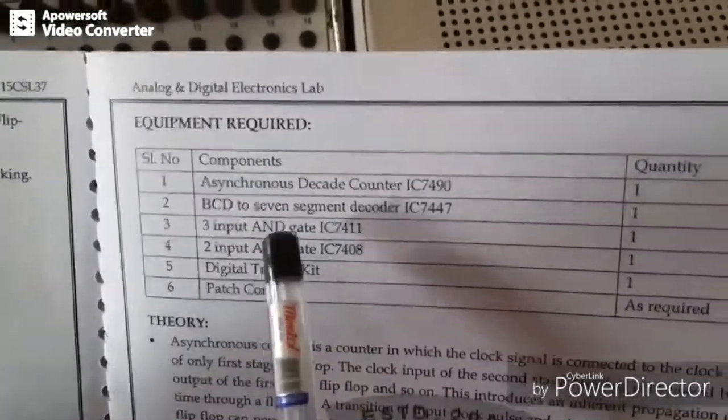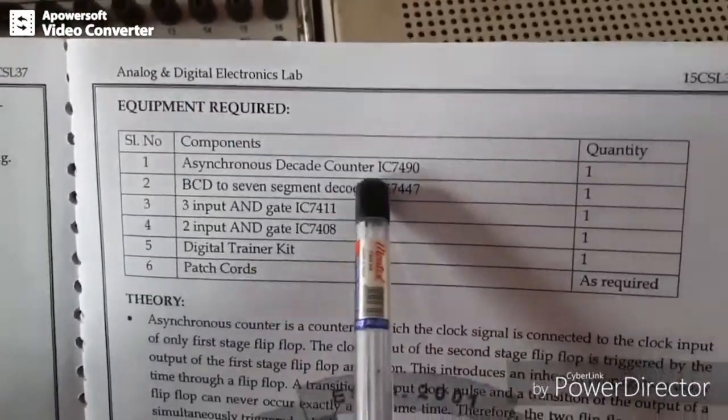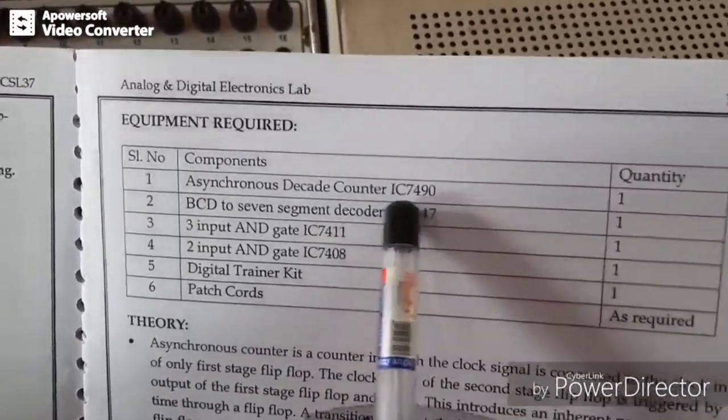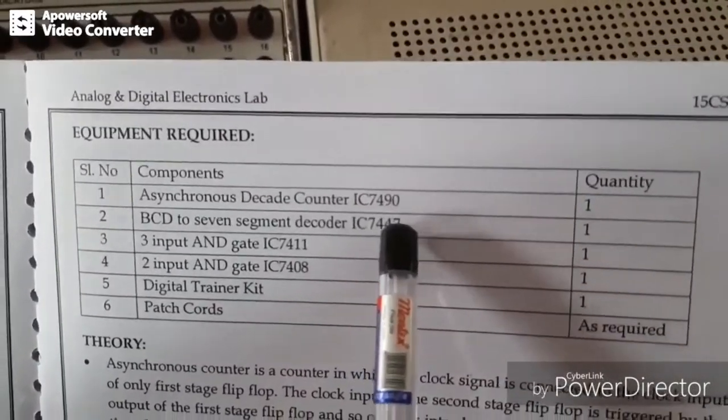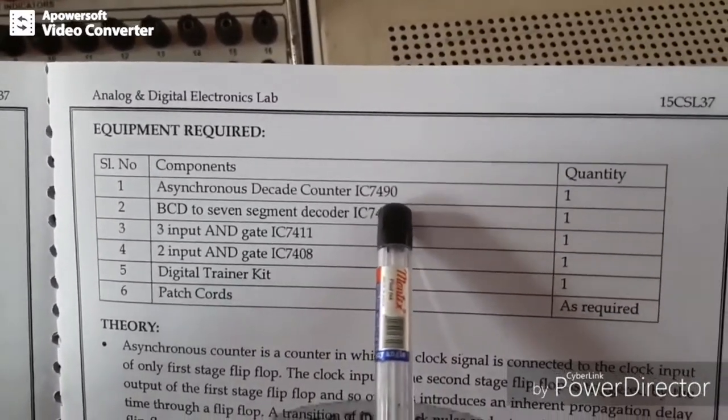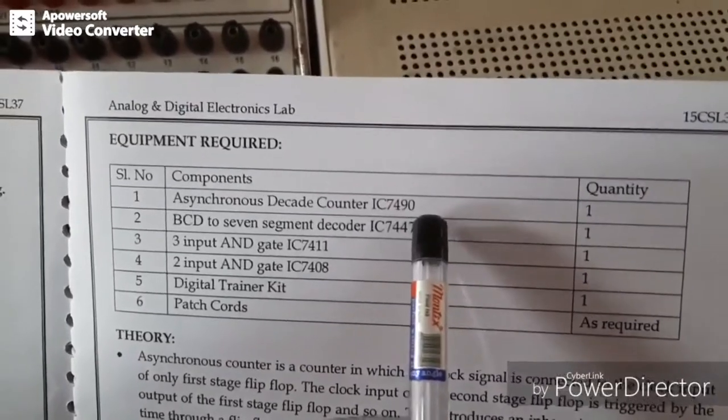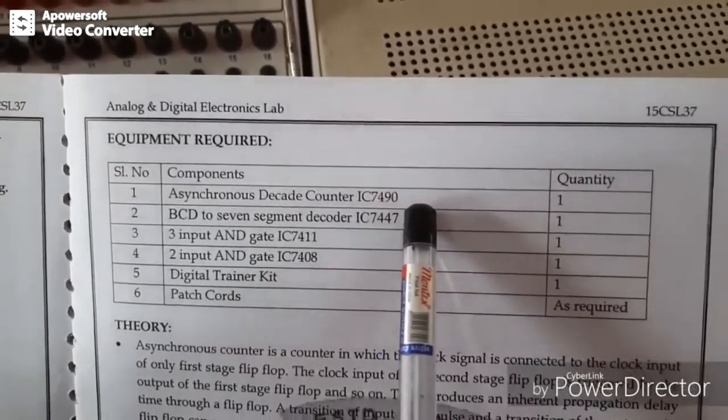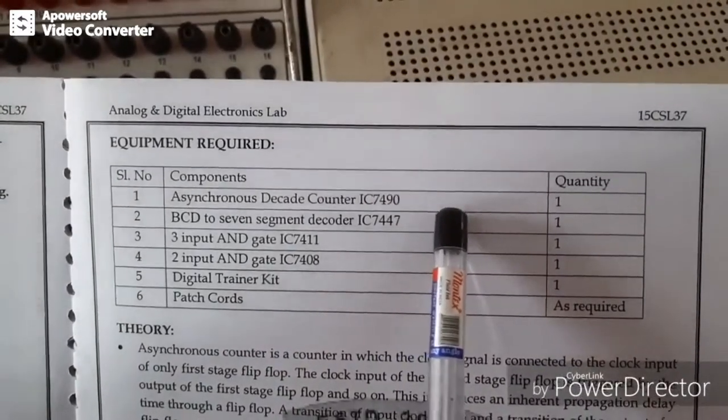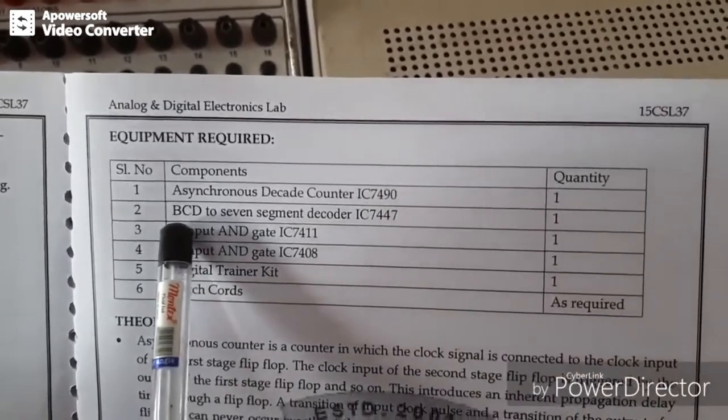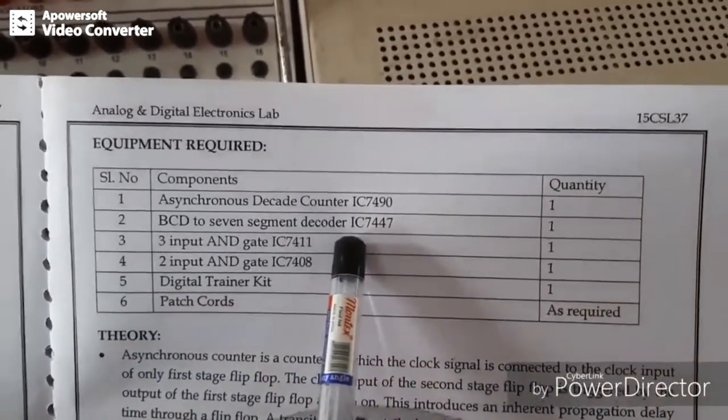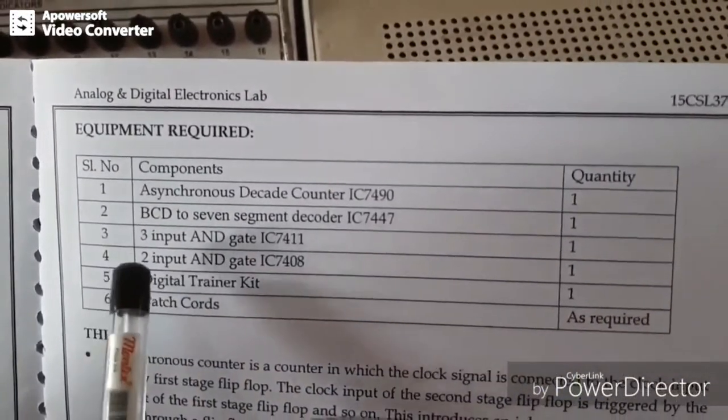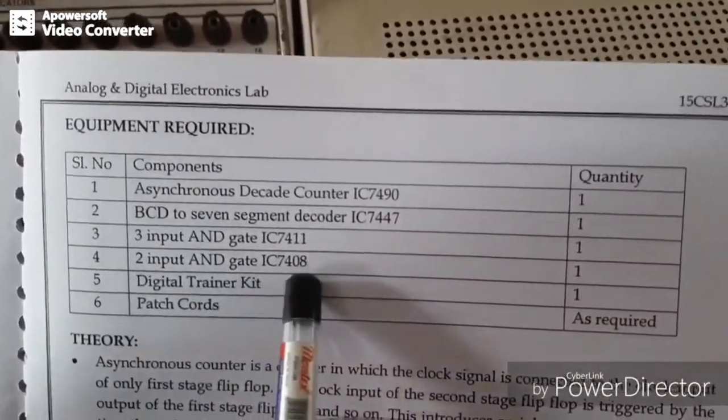Components required here are: one asynchronous decade counter 7490, which is a decade counter meaning a counter which counts 0 to 9, that is mod 10, 0 to 9, including zero 10 states are there. Then we have BCD to 7 segment decoder IC 7447 and 3 input AND gate and 2 input AND gate.